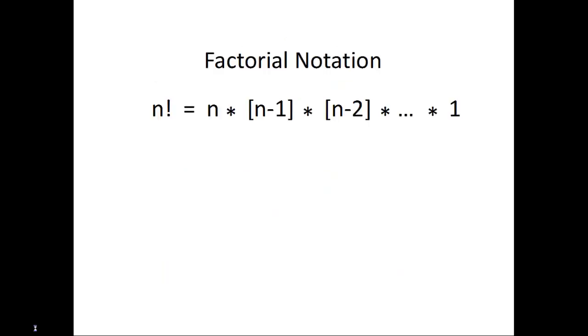This can be shortened using factorial notation. n factorial is the product of all integers from 1 through n. So, 5 factorial equals 5 times 4 times 3 times 2 times 1, which is 120. We do define 0 factorial to be 1 for consistency's sake.